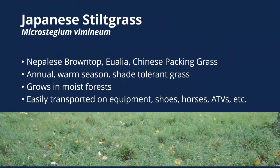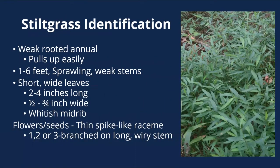The next is Japanese stiltgrass — also called browntop or packing grass. This is an annual warm-season shade-tolerant grass that grows in moist forest and is easily transported on equipment, shoes, and horses. It's a weak-rooted annual that pulls up easily — which is actually an identification characteristic, since most other wide-bladed grasses you'd find in Illinois forests are perennials that won't pull up easily. Give it a little yank and if it pops out of the ground with really weak roots, there's a good chance it's stiltgrass.